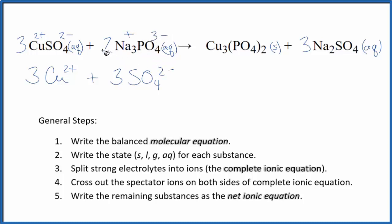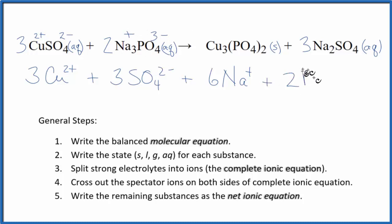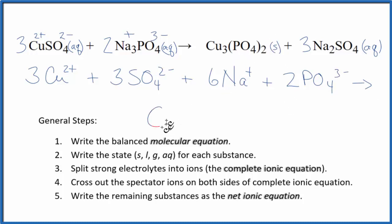So we have 2 times 3 — six sodium ions — and then two phosphate ions. These will be the reactants in our net ionic equation. On the products side, when we have a solid we don't split it up, so copper 2 phosphate appears as a solid.